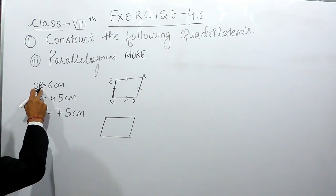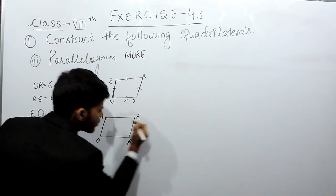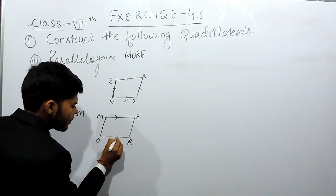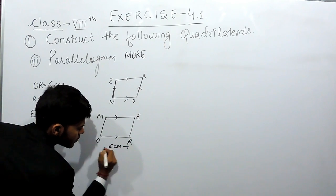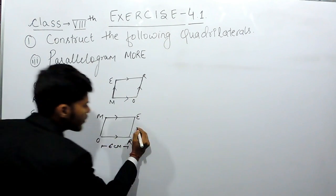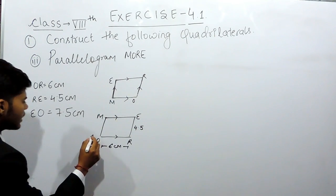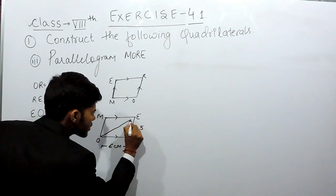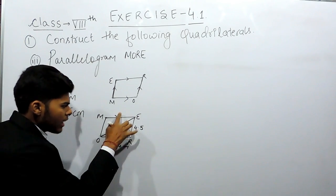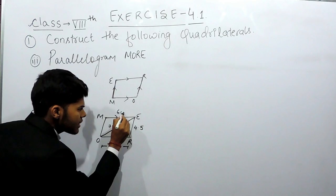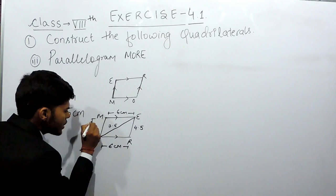We are given OR. So we can write this like O-R. So it will be M-O-R-E again, the same parallelogram. Now we are given that OR is 6 centimeters, RE is 4.5 centimeters, and EO, the diagonal, is 7.5 centimeters. You should keep in mind that in this parallelogram, this 6 centimeters should equal this 6 centimeters, and this 4.5 centimeters equals this 4.5 centimeters.